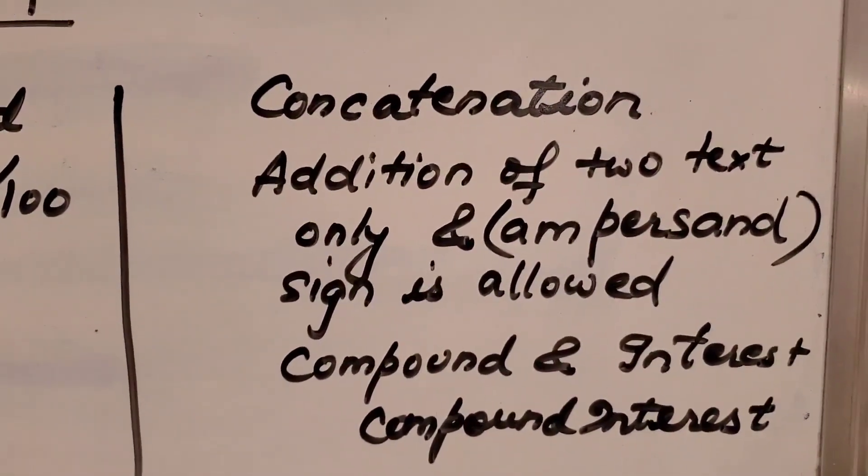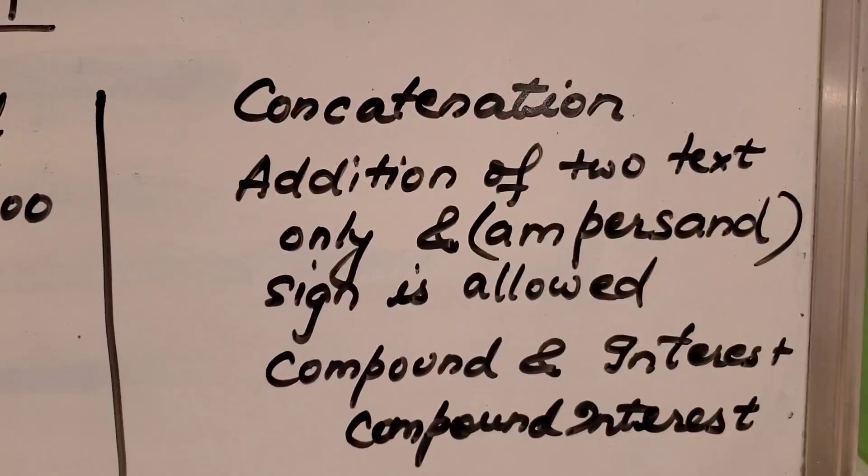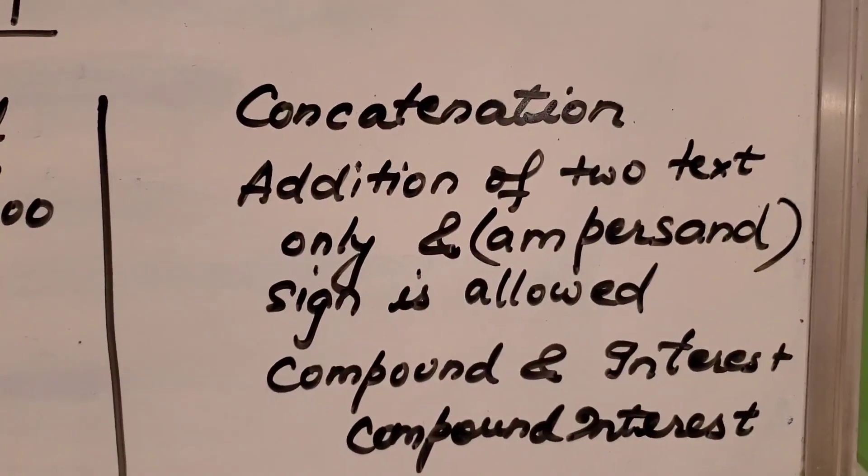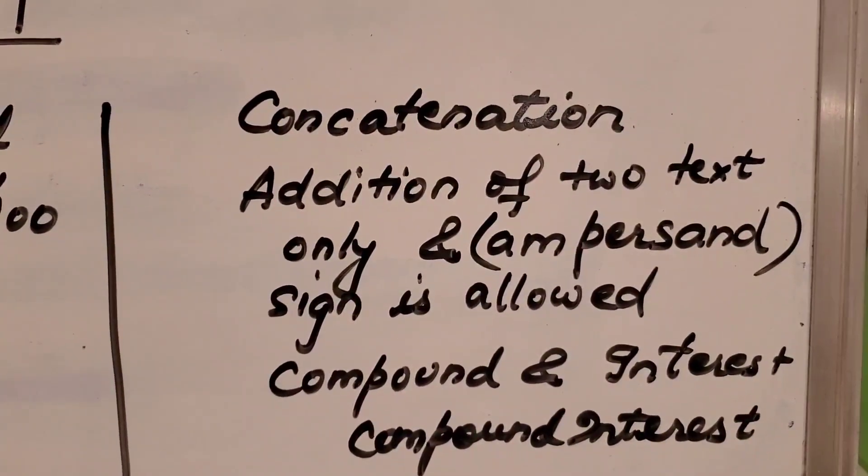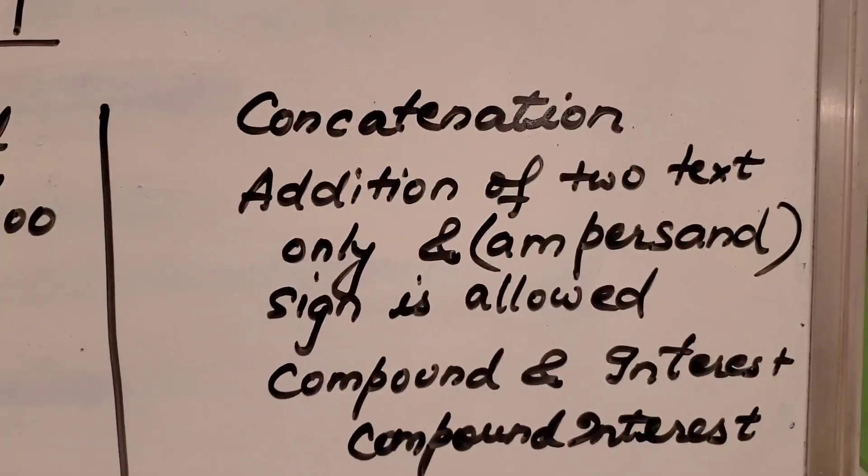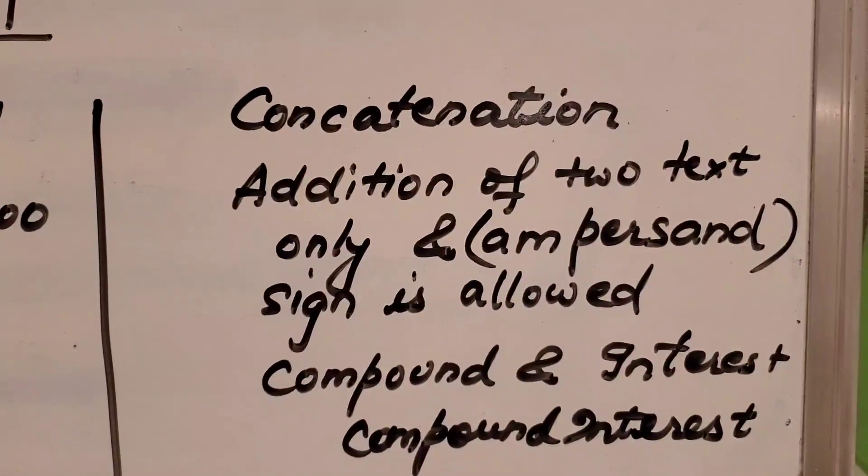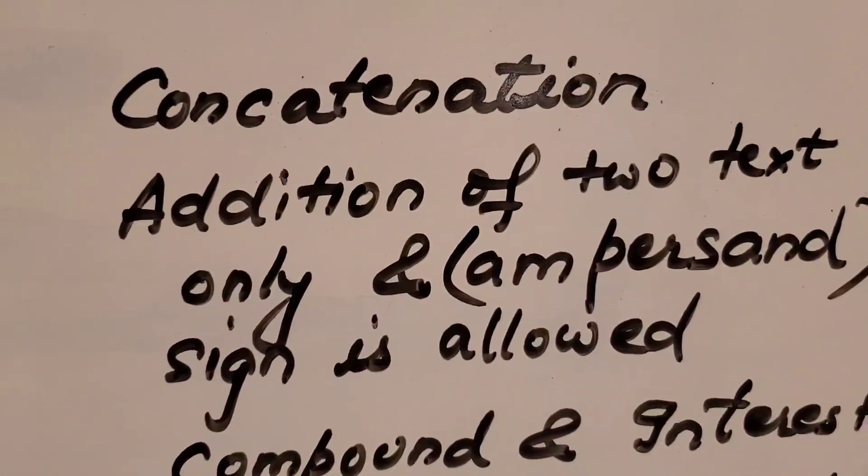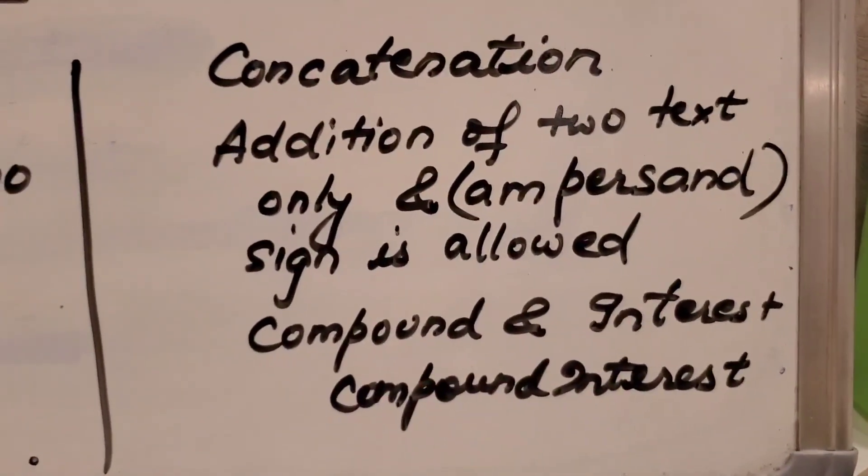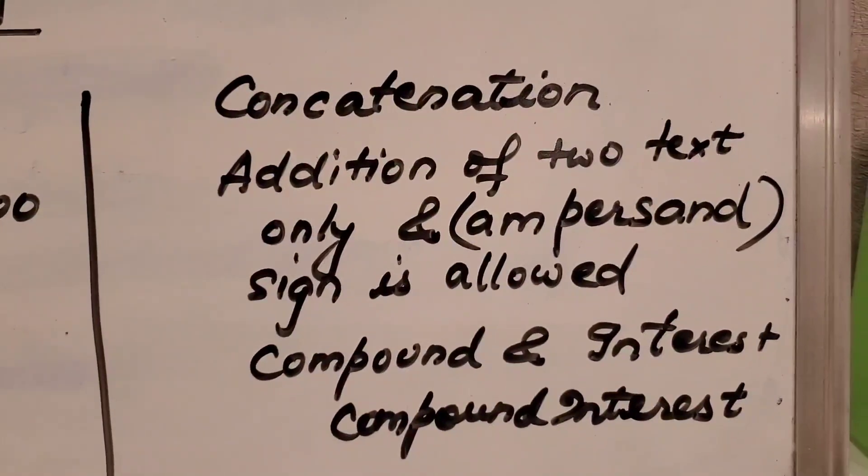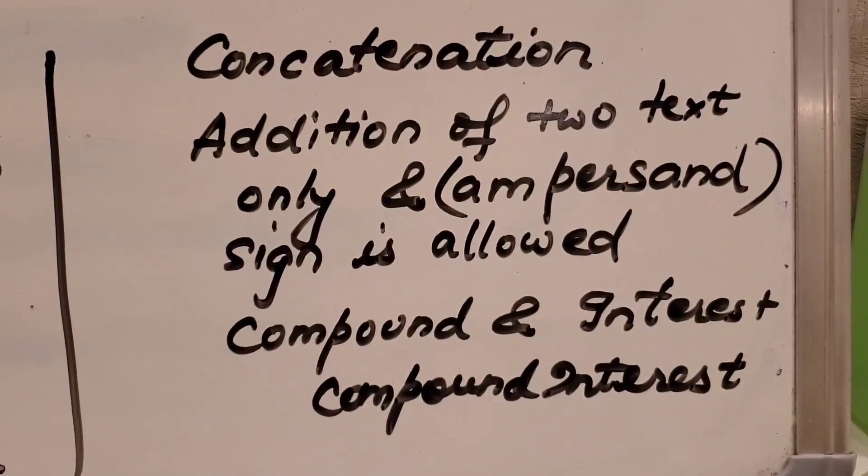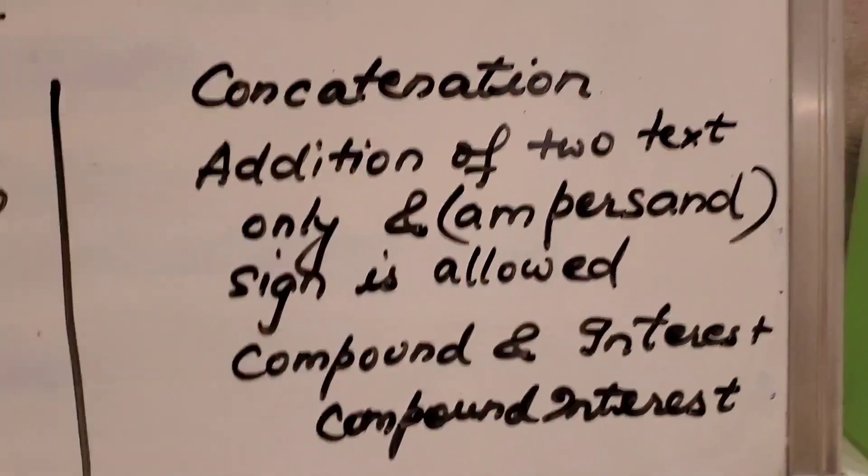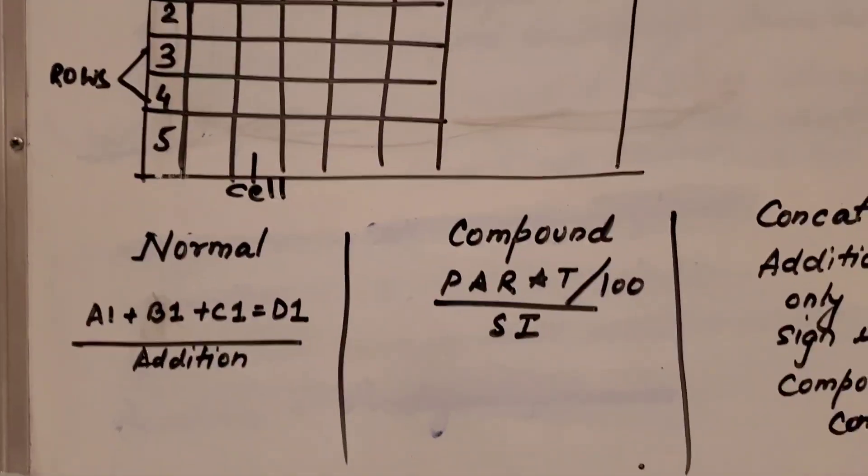And then the concatenation. It's a very new term for you. Concatenation means something when you want to add. For example, two words like I have to tell you good morning. So, good is another word and morning is another word. And we want to join them. So, addition of two texts we call it concatenation. And here we use only one symbol which I have drawn which you call it ampersand. This is a kind of opposite S. Ampersand we call this sign. This sign is only allowed to use like I have created one example. Compound ampersand interest. And the word becomes compound interest. So, these are the three different formulas which I have covered in this particular video.